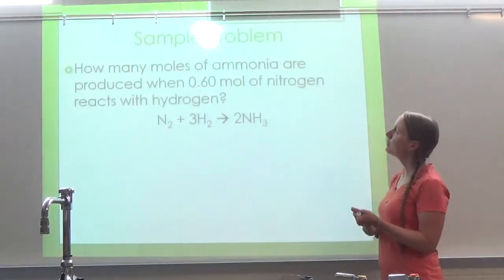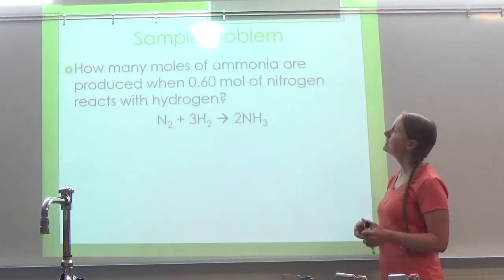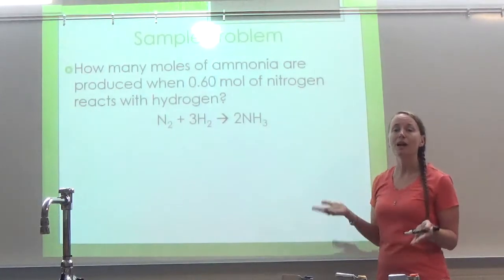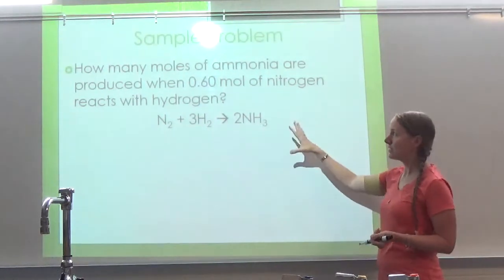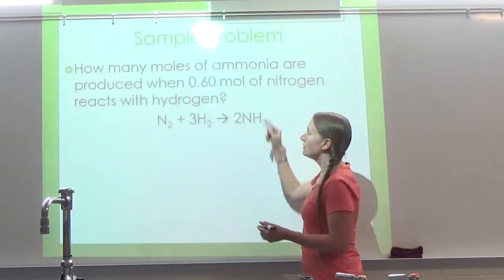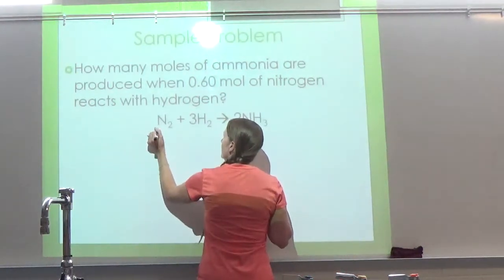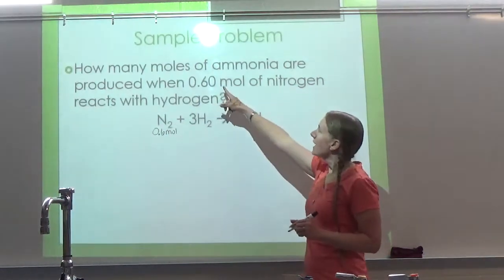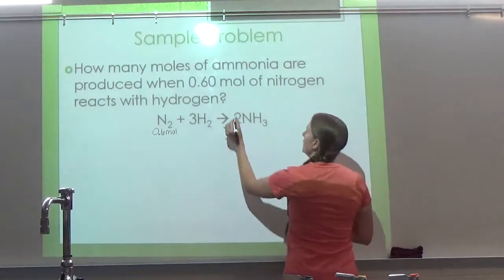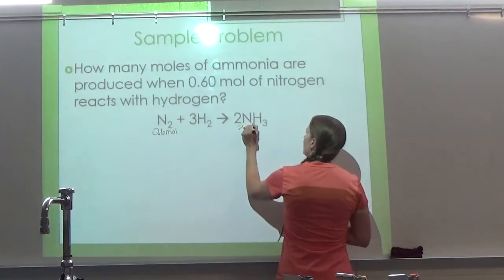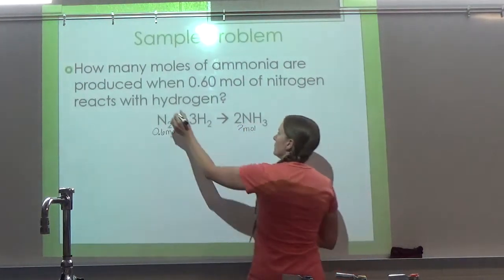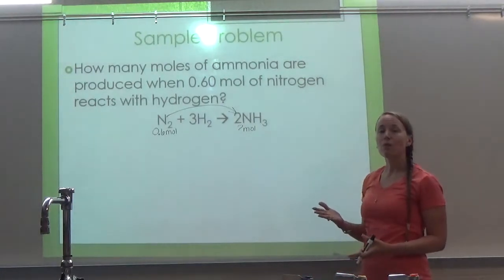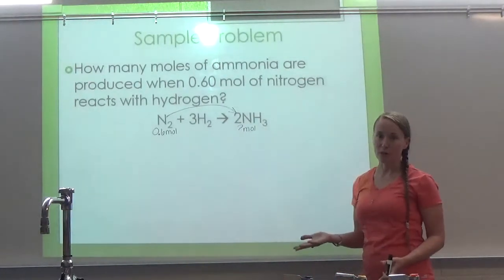The question says: how many moles of ammonia are produced when 0.6 moles of nitrogen reacts with hydrogen? What I always like to do is write my information on my reaction. So we are starting with 0.6 moles of nitrogen — I'll write 0.6 moles under nitrogen. The question asks how many moles of ammonia, which is NH₃, so I'm going to put a question mark for moles there. In other words, we are going from nitrogen to ammonia. Once I know where I'm starting and where I'm going, I can set up my mole ratio as my conversion factor.